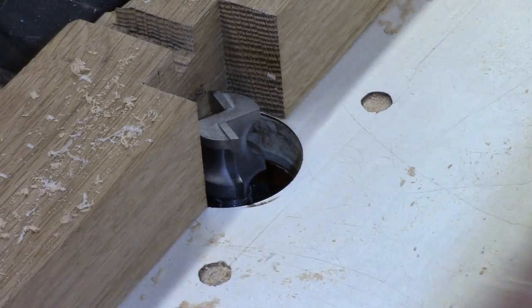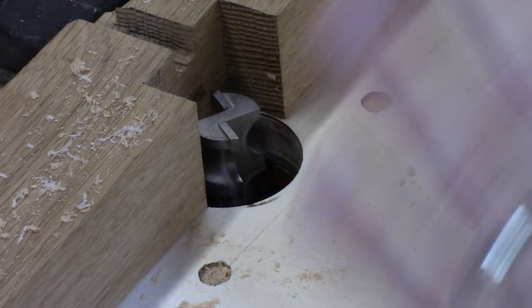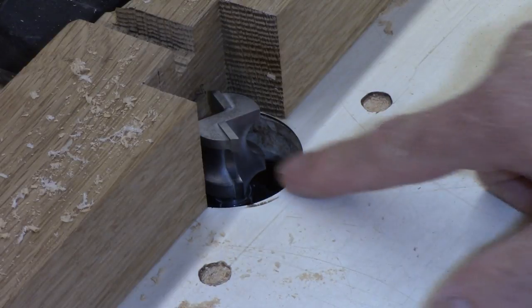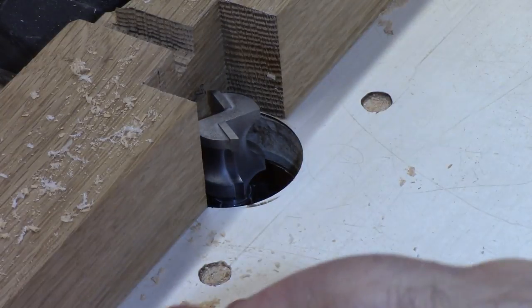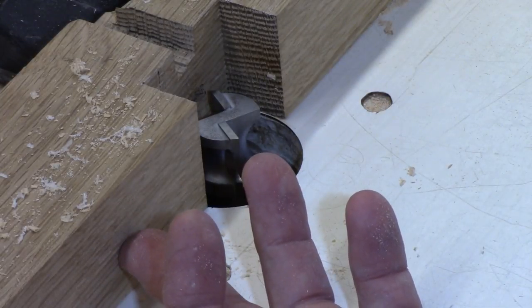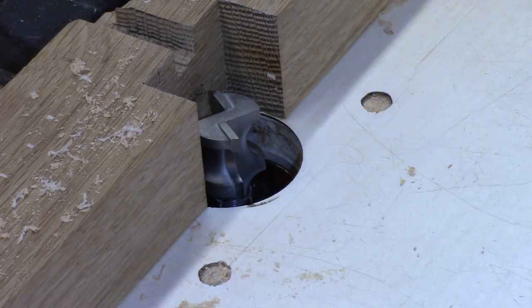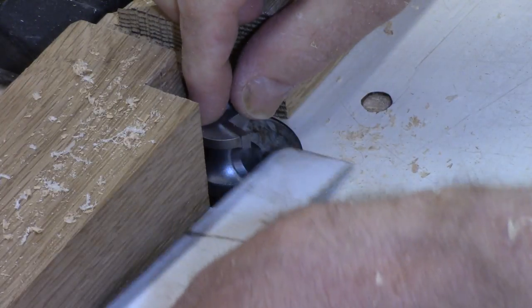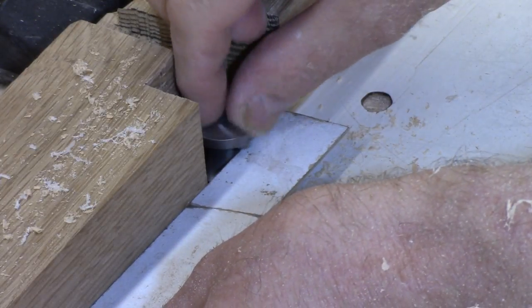So you really want to pay attention to getting the fence set up properly and the bit set up properly, so you don't have a ridge on the bottom and you don't have a snipe here. And once again, just to reiterate, you want to have this part of the router just so it's barely touching there.